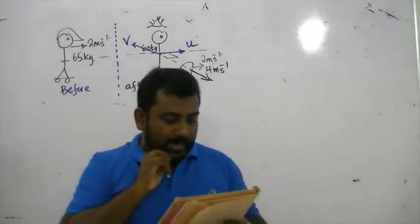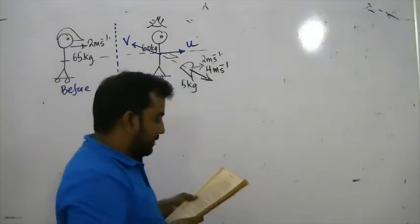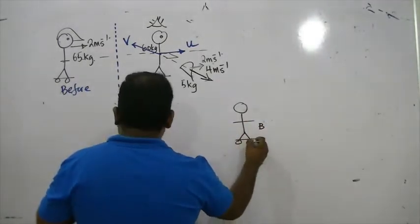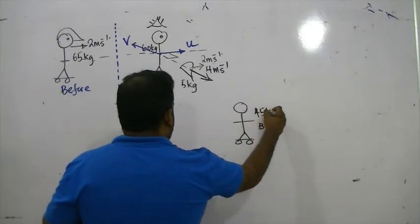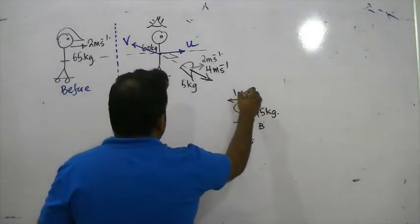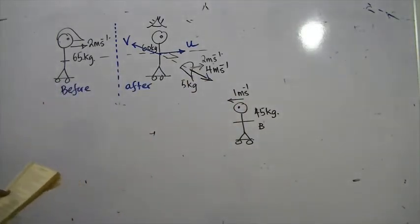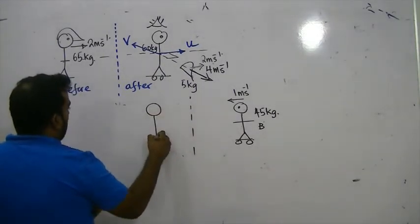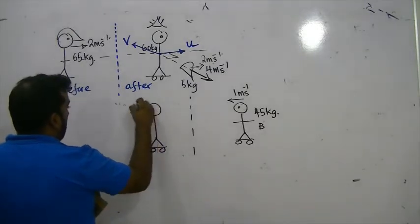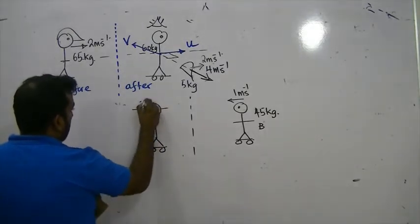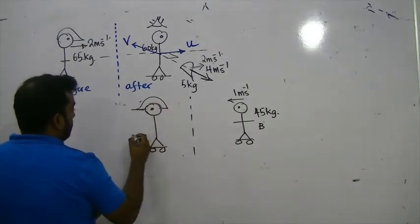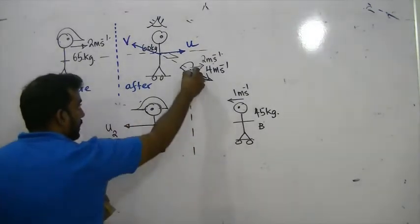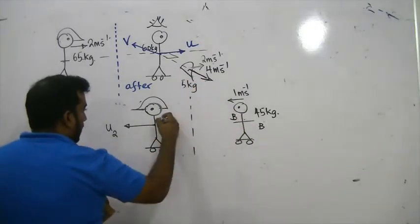Next question. Another skater B, of mass 45 kg, is sliding freely in the opposite direction on a parallel track. He is travelling in the opposite direction with a velocity of 1 meter per second. He catches the thrown helmet, so now he has the helmet as well.